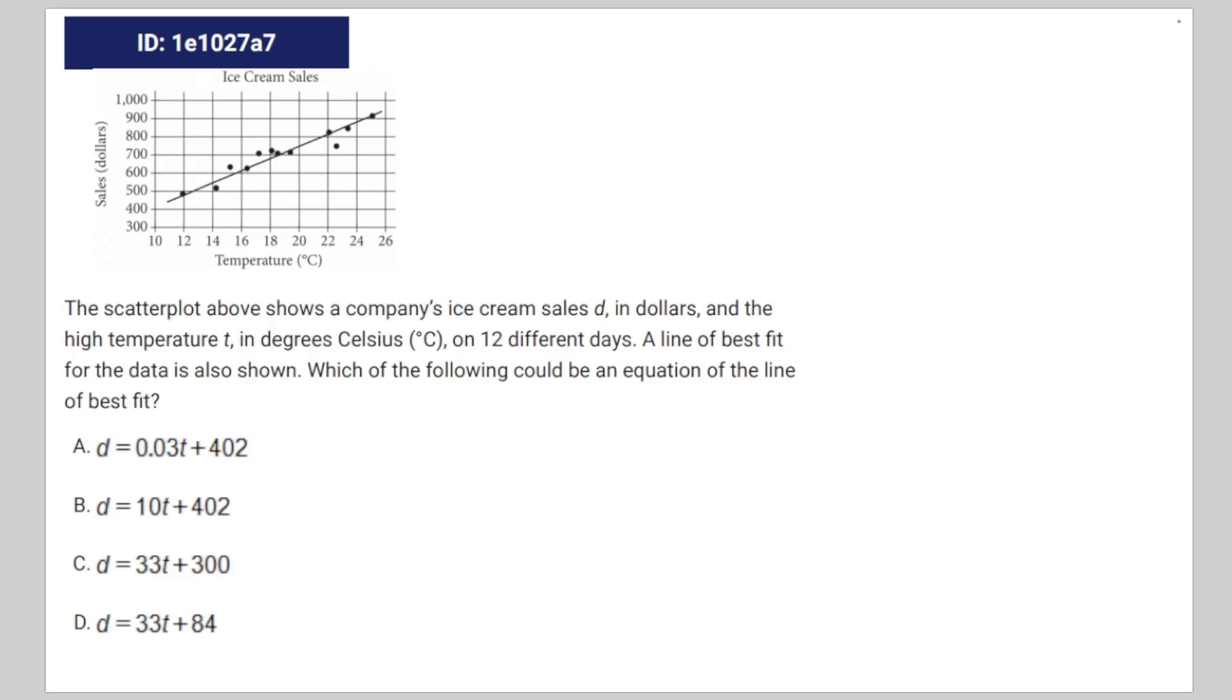Alright, so we're given the following math problem. The scatterplot above shows a company's ice cream sales d in dollars and the high temperature t in degrees Celsius on 12 different days. A line of best fit for the data is also shown. Which of the following could be an equation of the line of best fit?